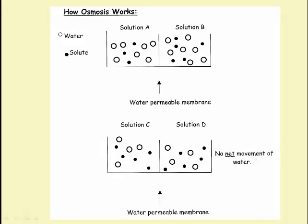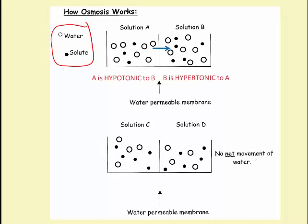How does osmosis work? Take a look at solutions A and B. Water is the open circle, and the solute is the closed-in circle. Which one has a higher concentration of water, assuming both have the same volume? Solution B has more solutes dissolved within it. As a result, we're going to call solution A hypotonic to solution B. So if A is hypotonic to B, we should notice a movement of water towards solution B.